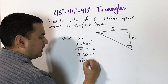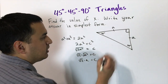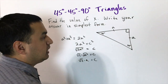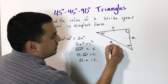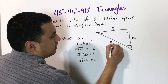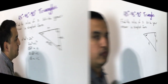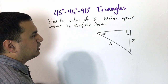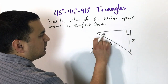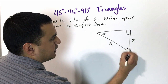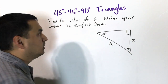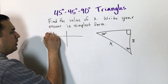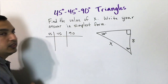So the relationship for the 45-45-90 triangle is: if the legs each have length 'a', the hypotenuse is always a√2. Looking at an example — if one angle is 45° and another is 90°, the third must also be 45°. Some people find it helpful to make a table with columns for 45, 45, and 90.